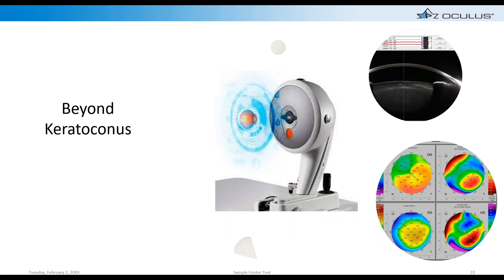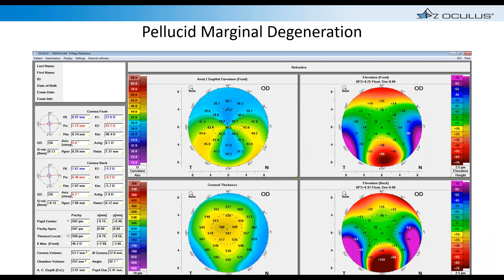Now let's go beyond keratoconus and discuss other anterior segment conditions the Pentacam can help measure and diagnose. Pellucid marginal degeneration is a variant of ectasia — the key difference from keratoconus is the location of thinning. In pellucid, the thinning point is one to two millimeters from the inferior limbus, around 6 o'clock. On a classic pellucid map, you see very steep anterior elevation inferiorly, with even greater posterior elevation — sometimes 160 microns — and the classic bear claw or kissing doves axial pattern.